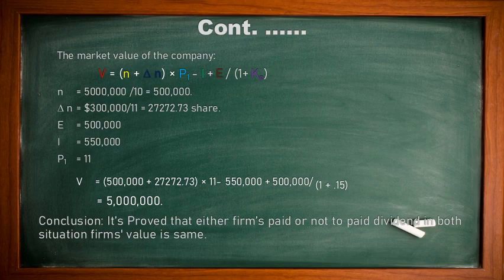Market value of the company: V = [(n + ΔN) × P1 − I + E] / (1 + k). We already calculated 500,000 shares are available. New shares required: $300,000 divided by share price of $11 equals 27,272.73 new shares. Earnings = $500,000, new investment = $550,000, share value = $11. We put all values in the market value formula and again get the same $5 million value of the company.